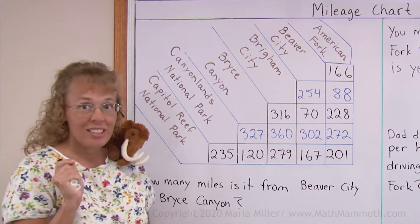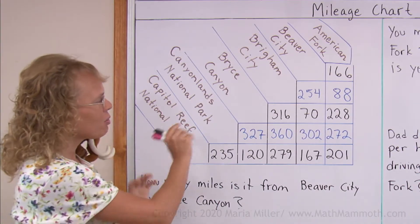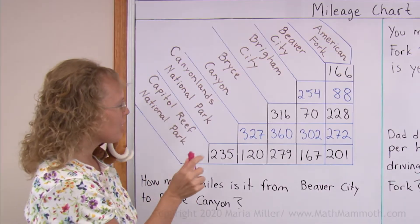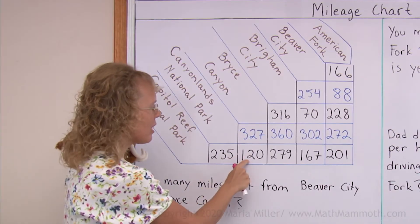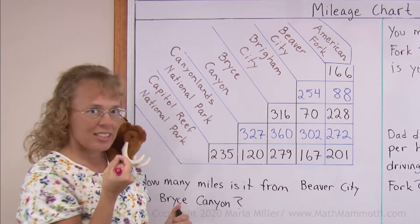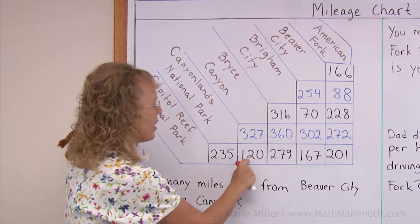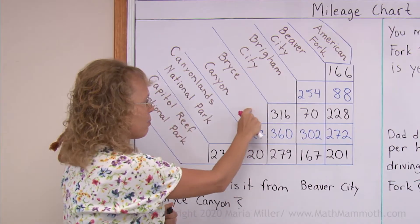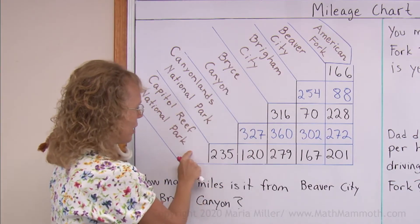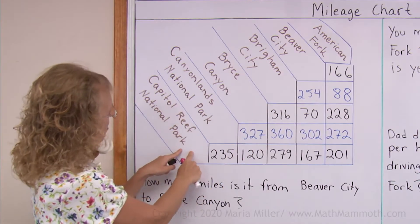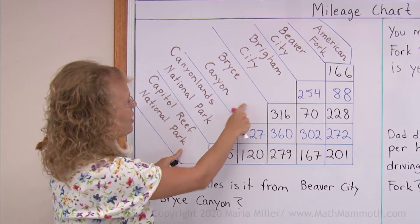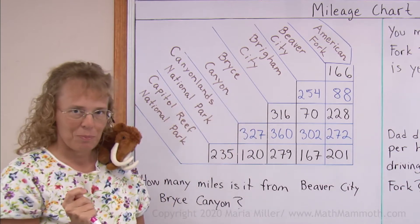Now, to read this chart, it's full of numbers. So let's say, for example, this number here — it's the distance between this place and this place. Capitol Reef National Park and Bryce Canyon.